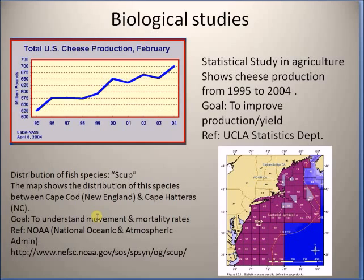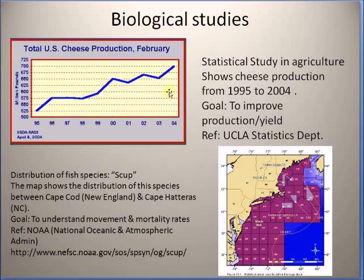In terms of biological studies, a good example is statistical studies of productions in agriculture. This plot basically shows the amount of production of cheese in millions of pounds for the years 1995 to 2004. You can clearly see that there is an upward trend from 1995 to 2004. The goal of this type of study is to show that there is an improvement in cheese production in a particular geographical region. For more information, you can go to this department website.